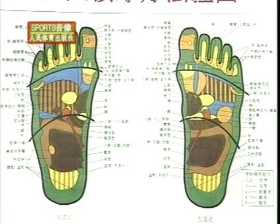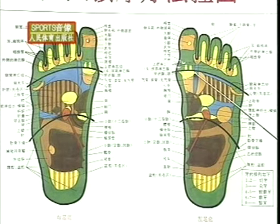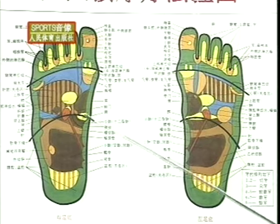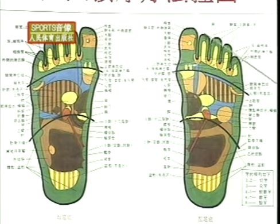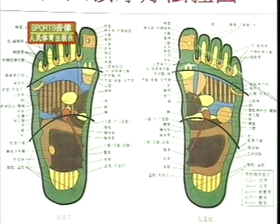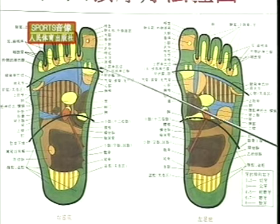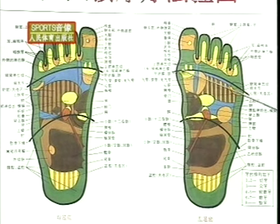足部在人体相对独立。如果将两足相并，就会发现两大母脚趾所支配的区域为头部反射区。两脚内侧为脊柱反射区。